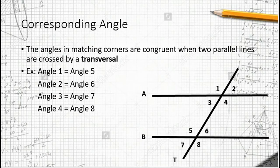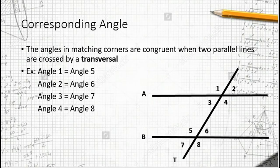Corresponding angles are congruent angles in matching corners, and they are constructed when two parallel lines are crossed by a transversal. The word transversal simply means a line that crosses a system of lines.